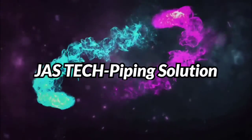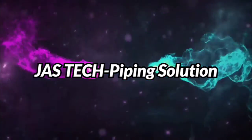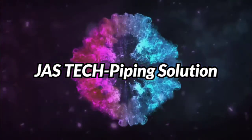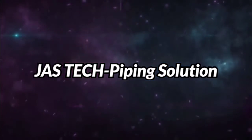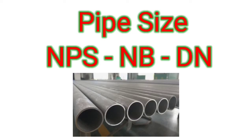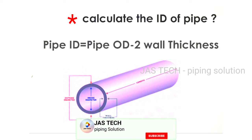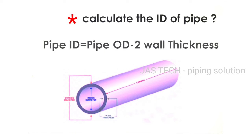Welcome to Jostec Piping Solution. Today our topic is Pipe Size: NPS, NB, DN, and Pipe ID calculation. Pipe ID is equal to pipe OD minus 2 times wall thickness.